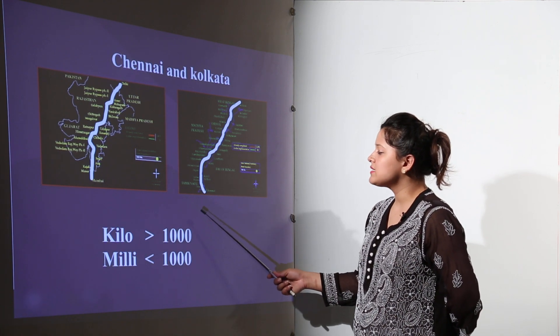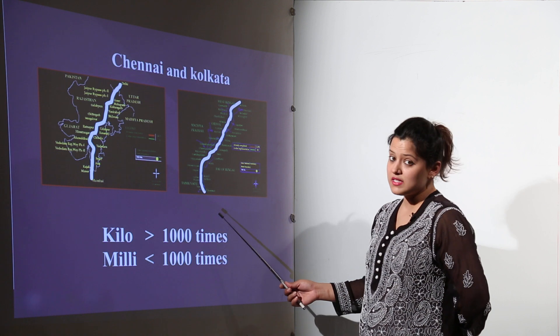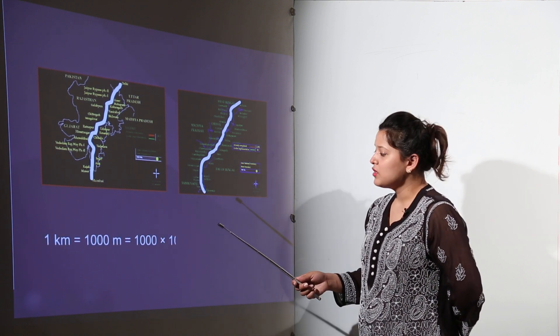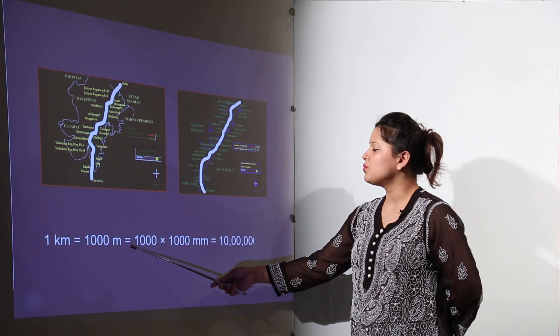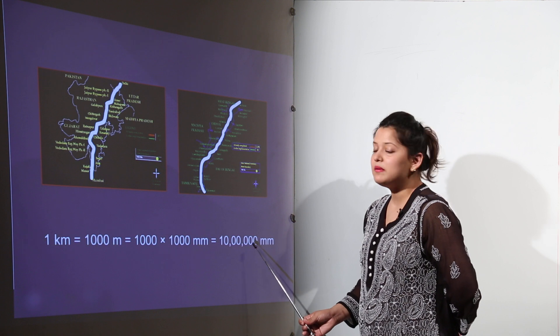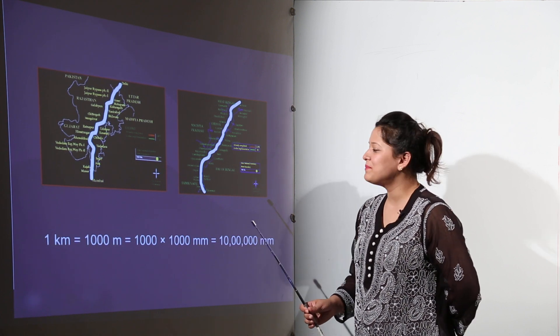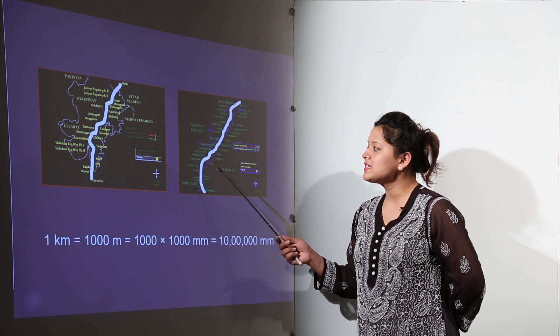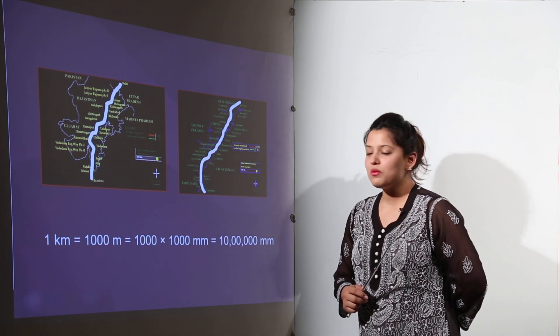So one kilometer is definitely greater one thousand times. And millimeter is one thousand times smaller. So one kilometer is equal to one thousand meters or that would be ten lakh millimeters as we have learnt to read the big numbers now. So the large distances can be measured with the help of kilometers.